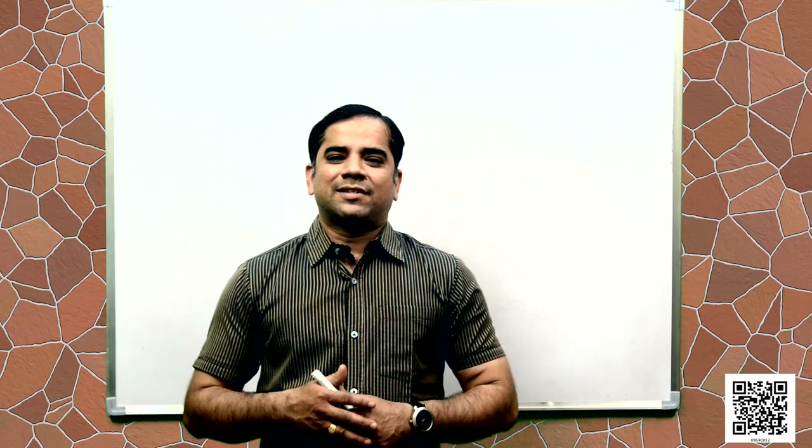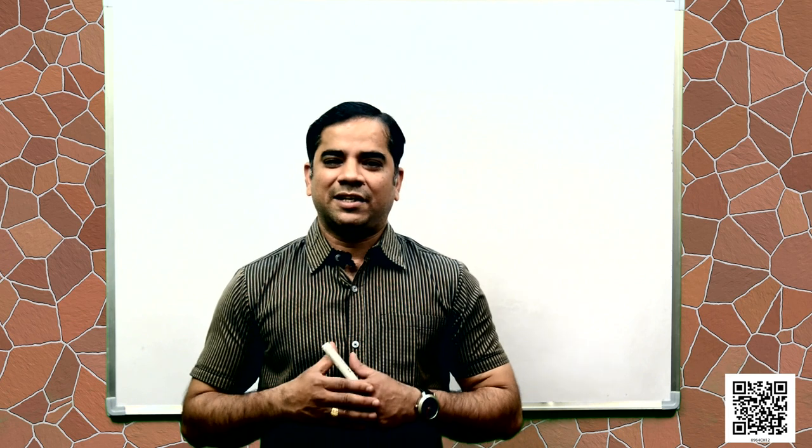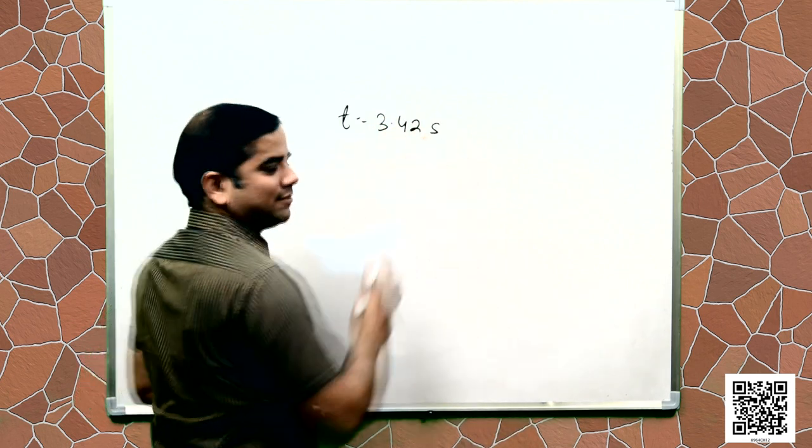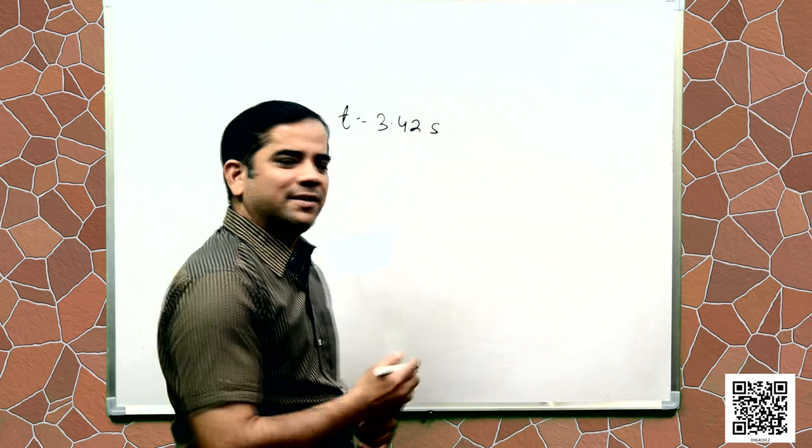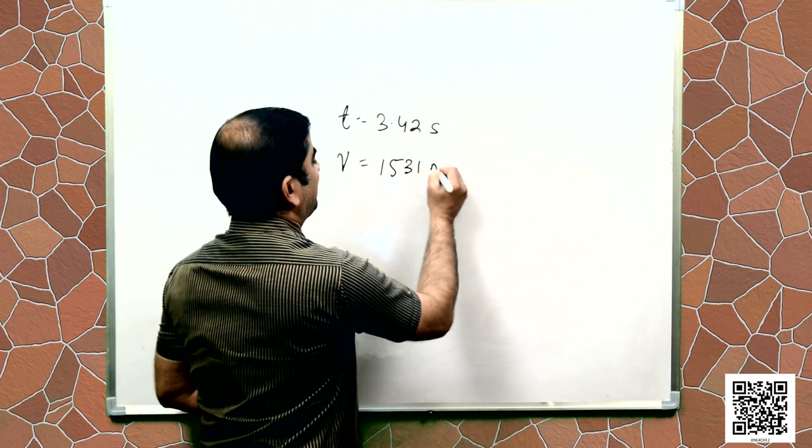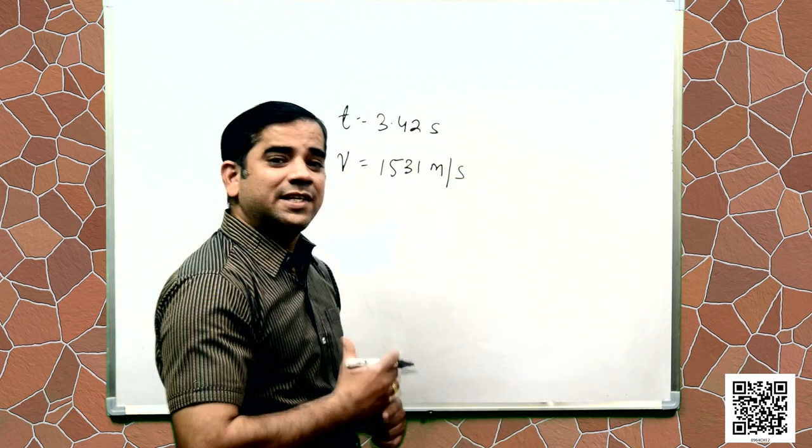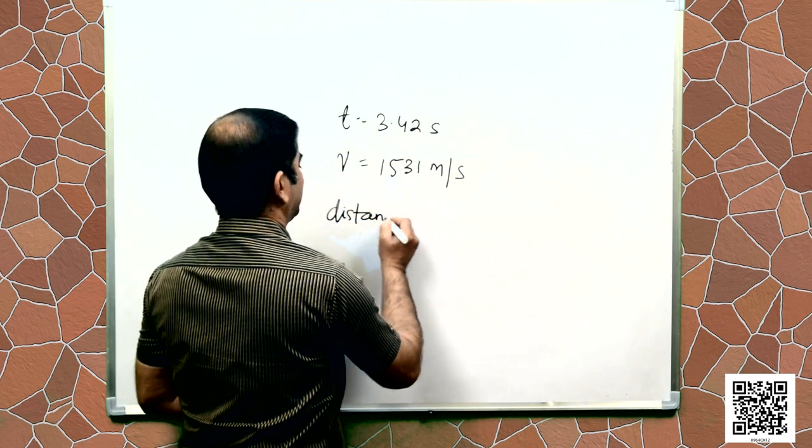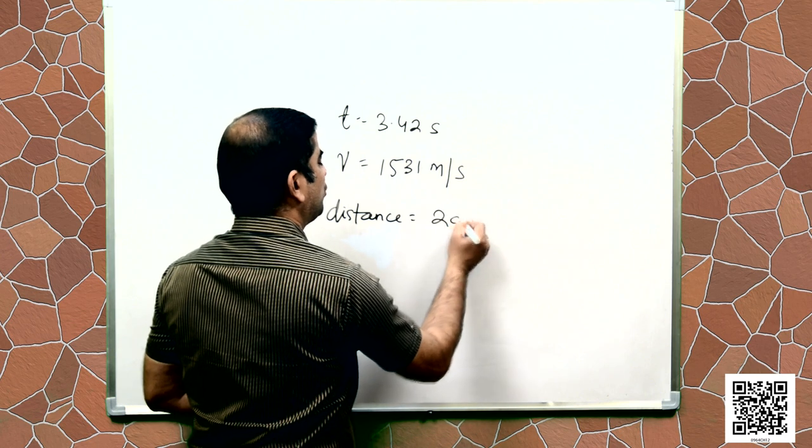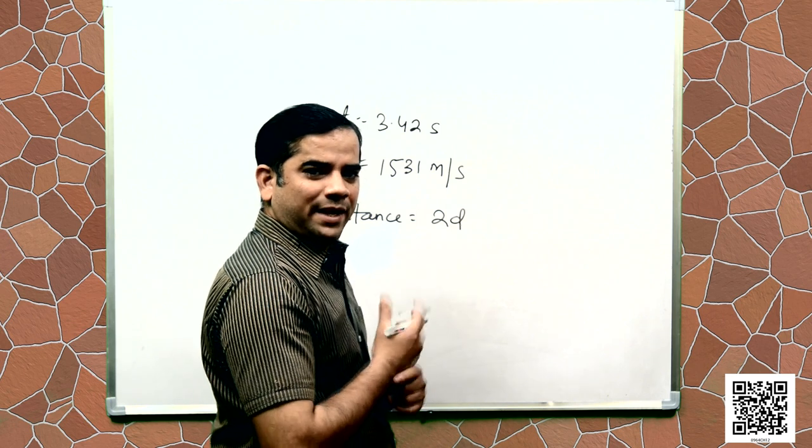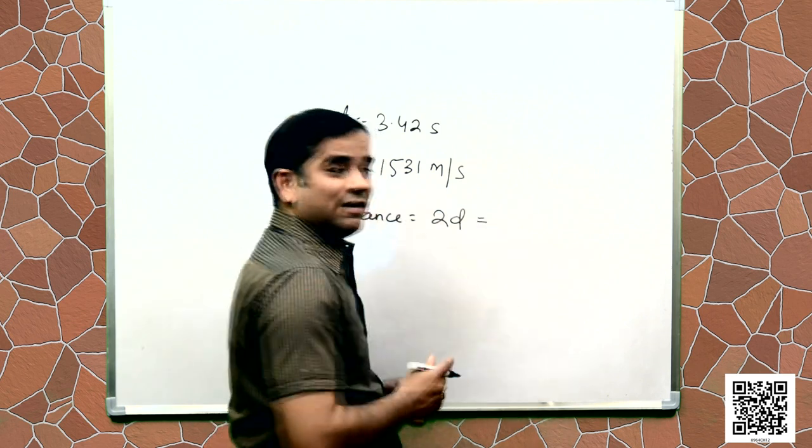Students, the time of travel, that means the time interval between transmission and detection, is given as 3.42 seconds. Speed that is given as 1531 meter per second. Distance travelled by the ultrasound, distance that is equal to 2D. It goes and comes back. So 2D is equal to V into T.